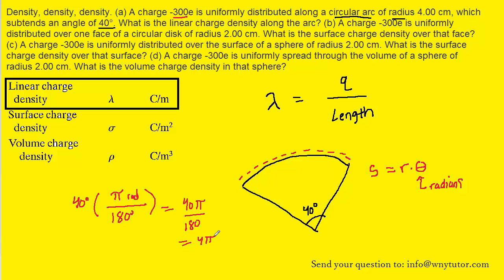And then we can reduce that to 4 pi over 18. And in fact, that reduces further to 2 pi over 9. So this would be the correct value to use for theta. And then the radius is given to us in centimeters. We're going to want to convert that into meters.